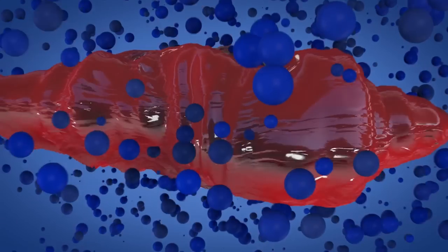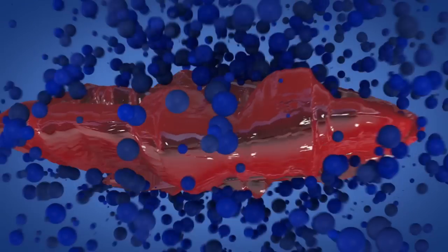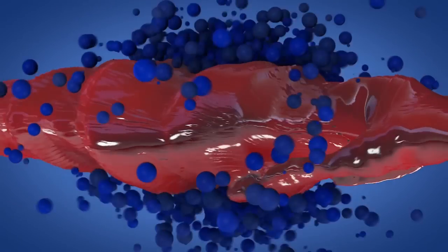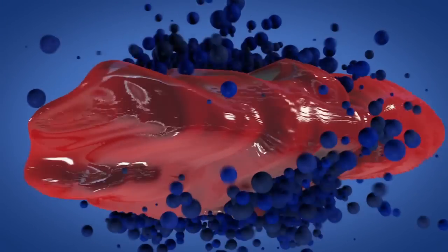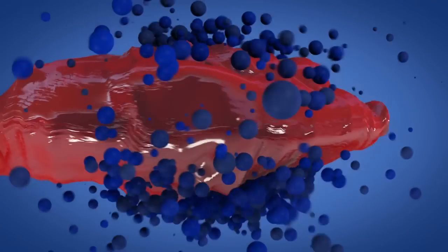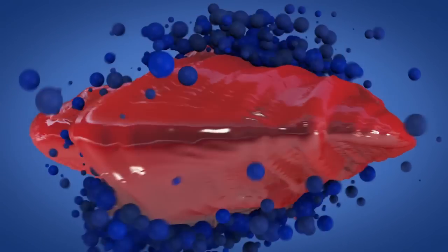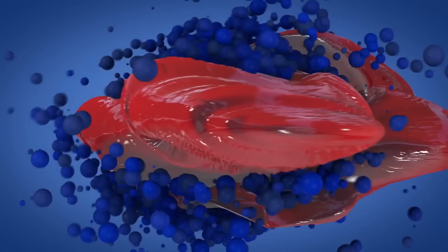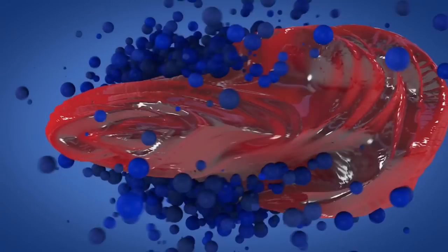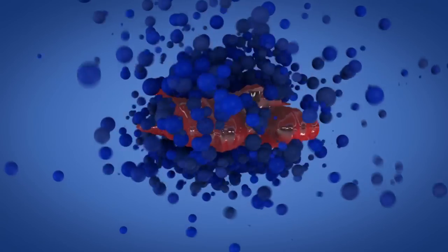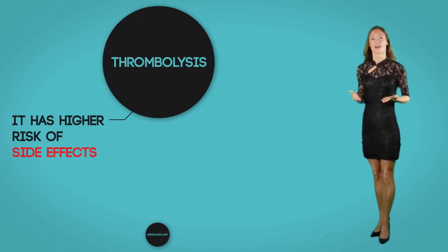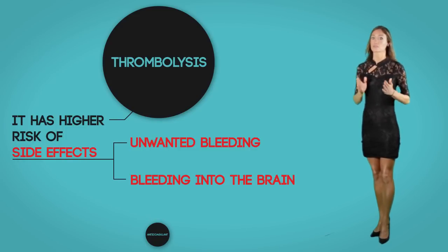Thrombolysis is an enzymatic destruction of the clot using medication. A clot-dissolving injection is given to dissolve the blood clot; alteplase is the usual medication, with streptokinase or urokinase as the main alternatives. This treatment is more effective than anticoagulation with heparin or warfarin; however, it carries a higher risk of side effects such as unwanted bleeding and, in worse cases, bleeding into the brain.